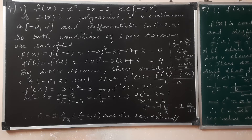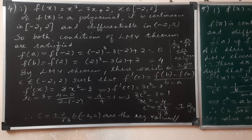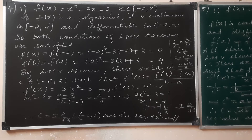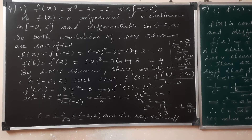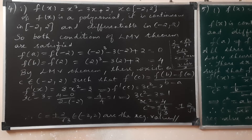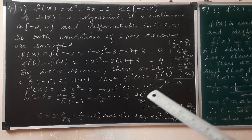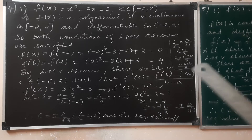We have to examine whether the given functions follow the conditions. There are actually two conditions. Note that f(a) not equal to f(b) is not required; we need to verify f(a) equal to f(b) for Rolle's theorem. Let's check the main conditions, and then we will find c.